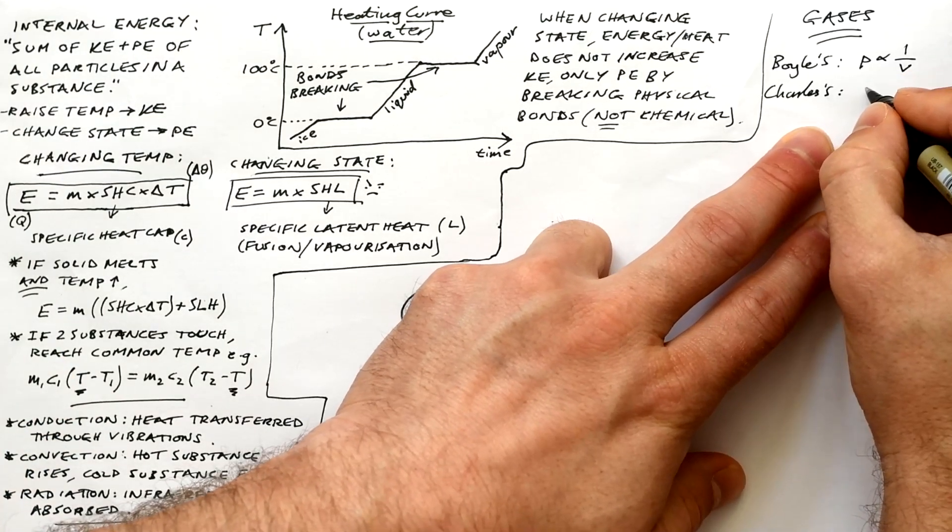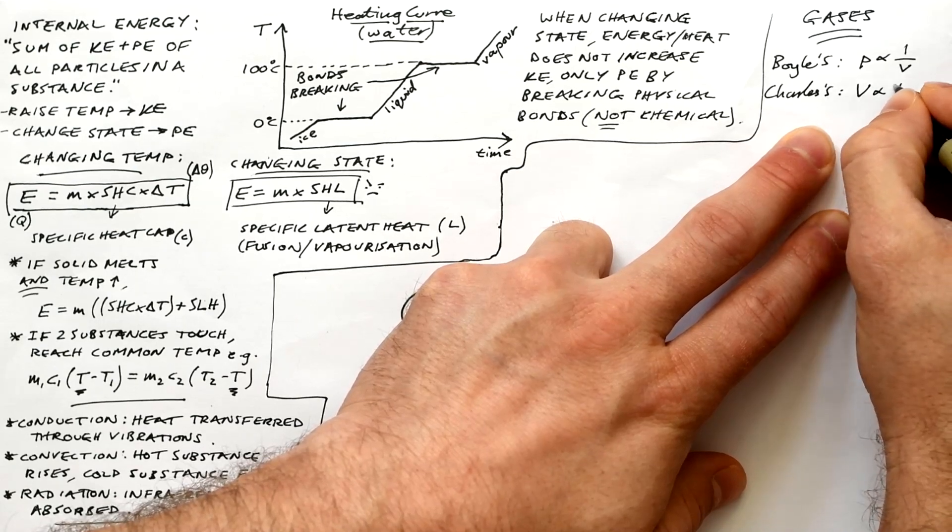The gas laws. Boyle's law is pressure is inversely proportional to volume. That's for a constant temperature.